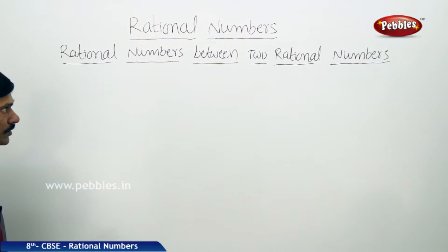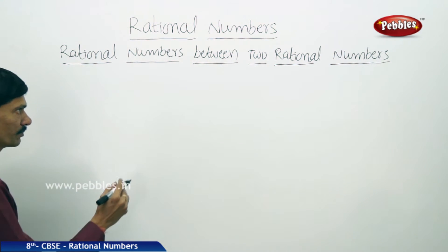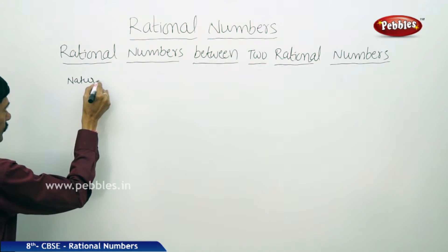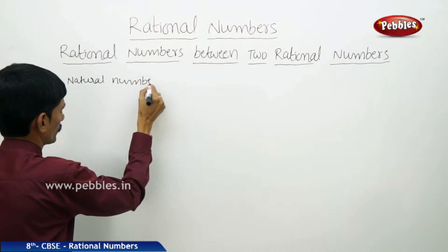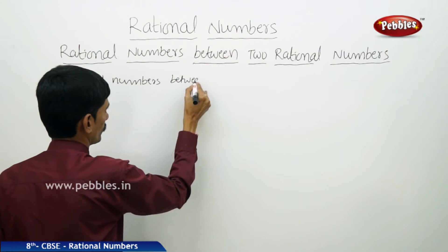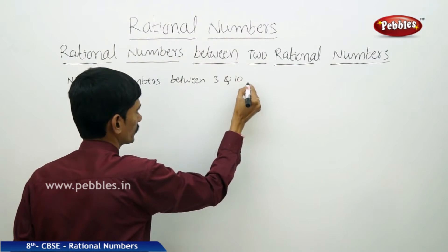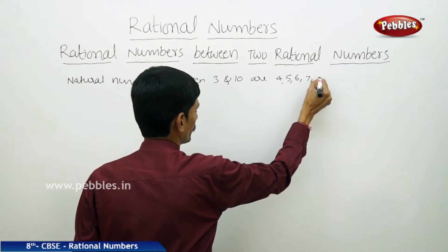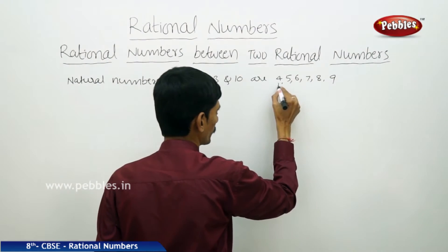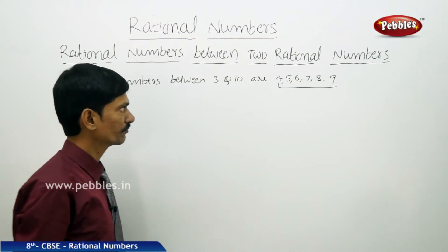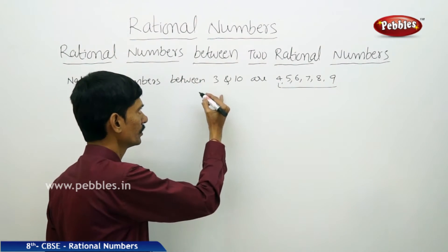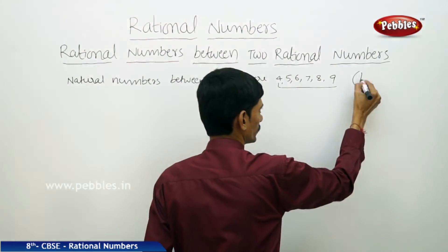The next topic is rational numbers between two rational numbers. First, let us find how many natural numbers are between 3 and 10. The natural numbers between 3 and 10 are 4, 5, 6, 7, 8, 9. There are finite natural numbers between two natural numbers.